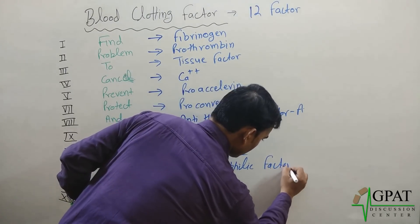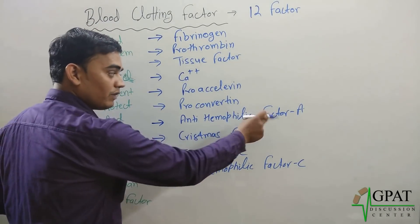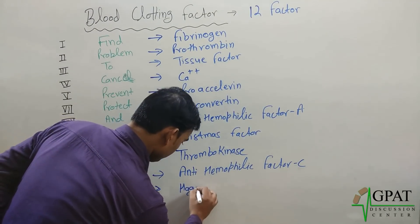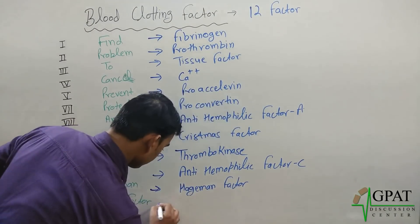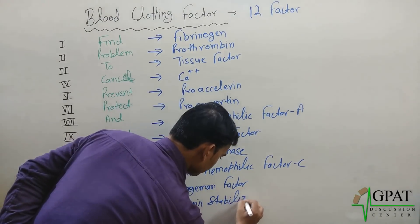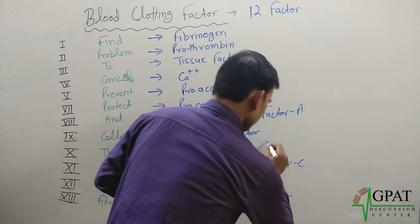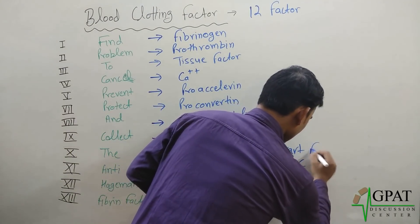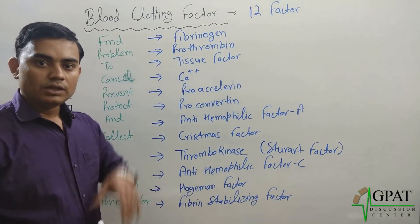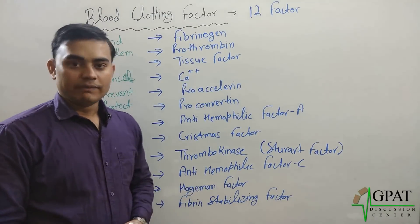Next, 'Anti' stands for Anti-Hemophilic Factor C (Factor XI). Since Anti-Hemophilic Factor A comes first and C comes below, the order is clear. 'Hegeman' refers to the Hageman Factor (Factor XII) and remains as such. Finally, 'Fibrin Factor' refers to the Fibrin Stabilizing Factor (Factor XIII). By this trick — Find Problem To Cancel, Prevent, Protect and Collect the Anti-Hemophilic Fibrin Factor — you can easily remember all the blood clotting factors.